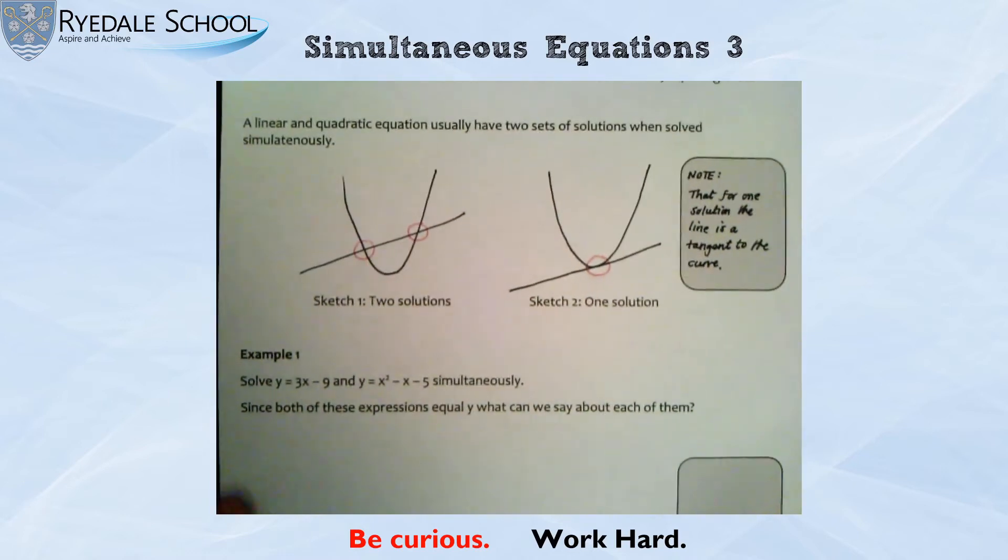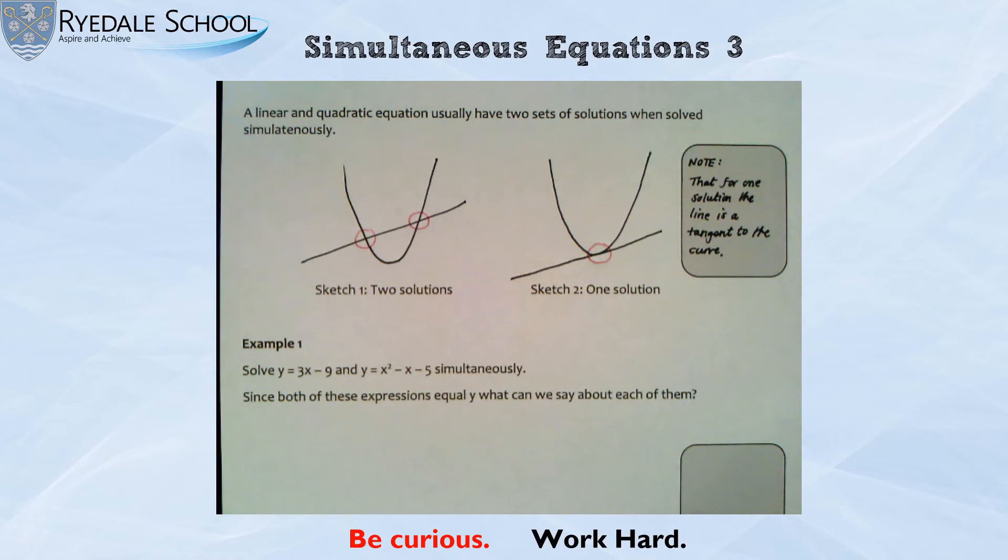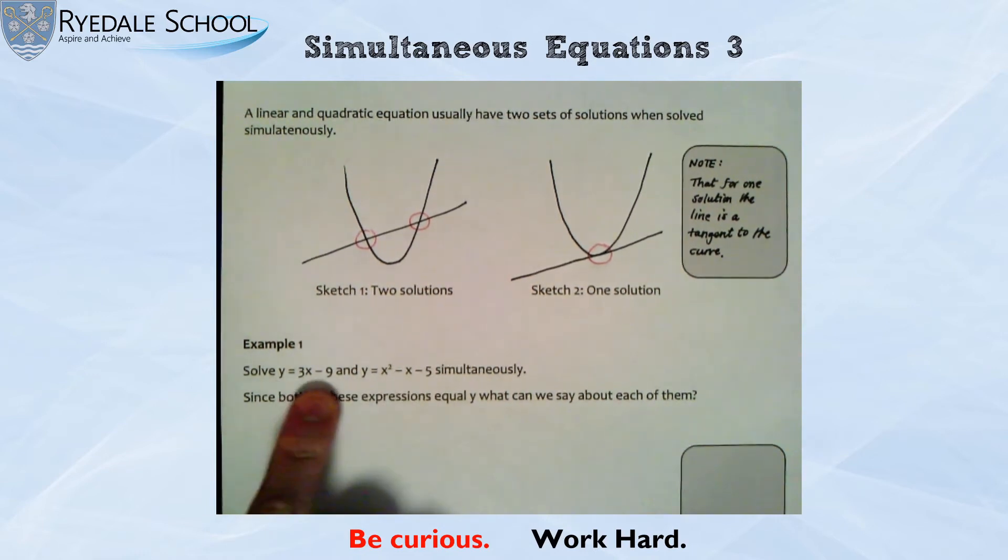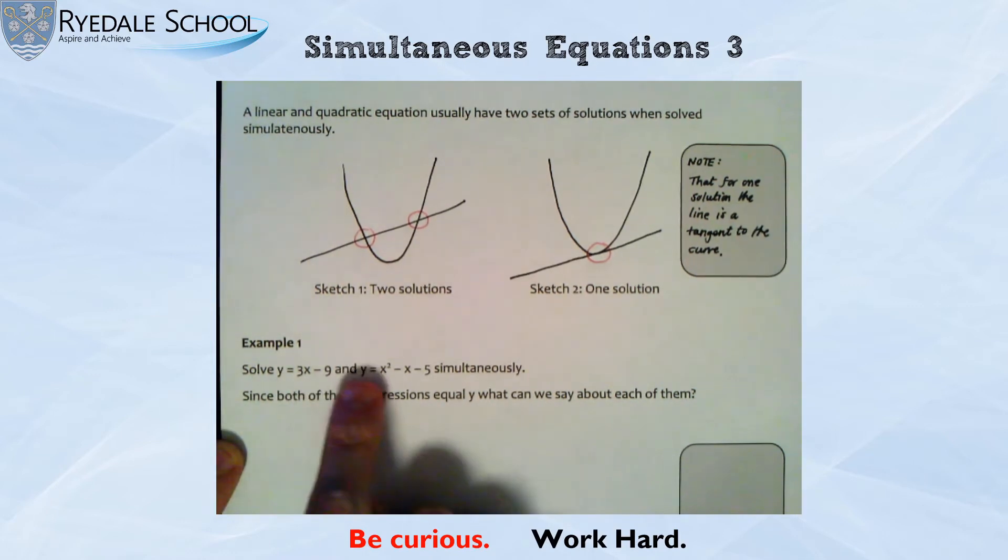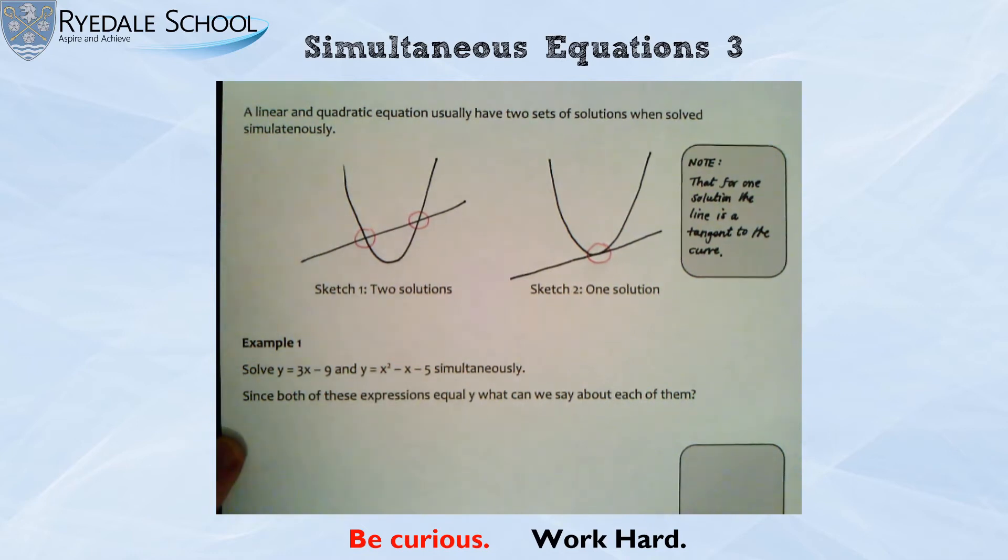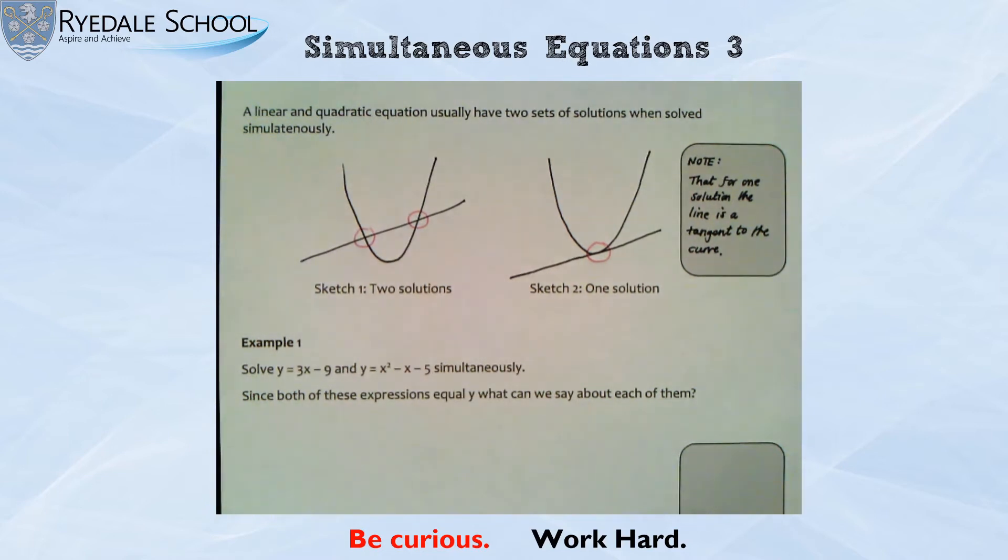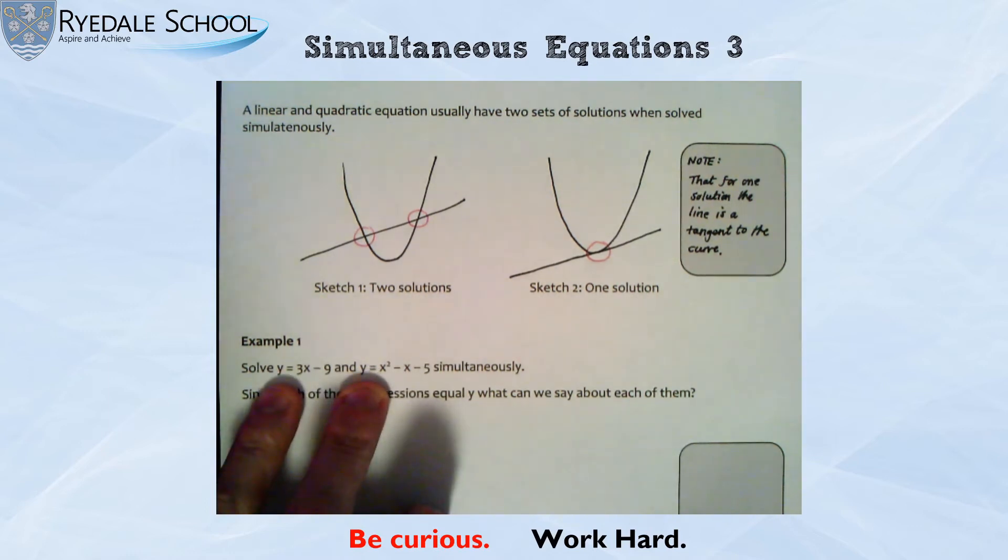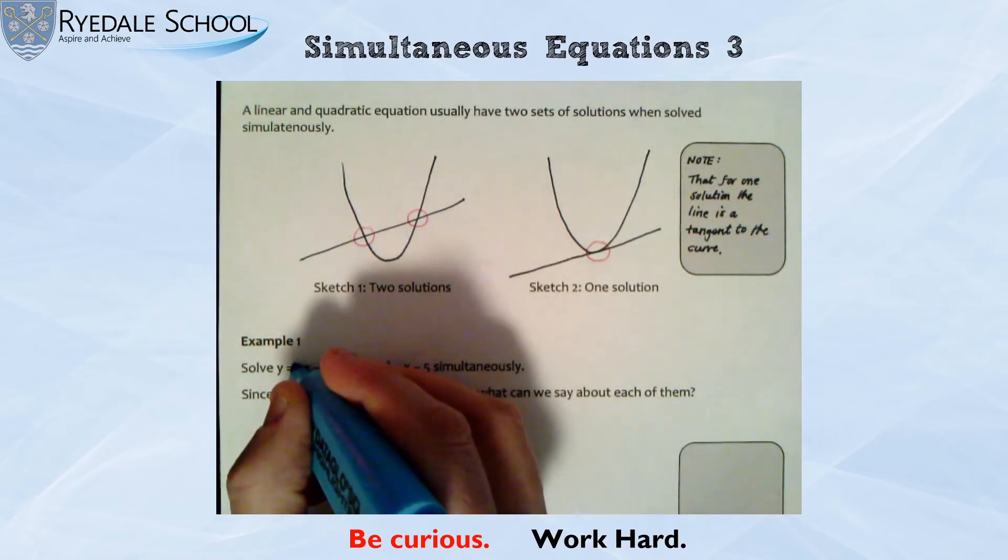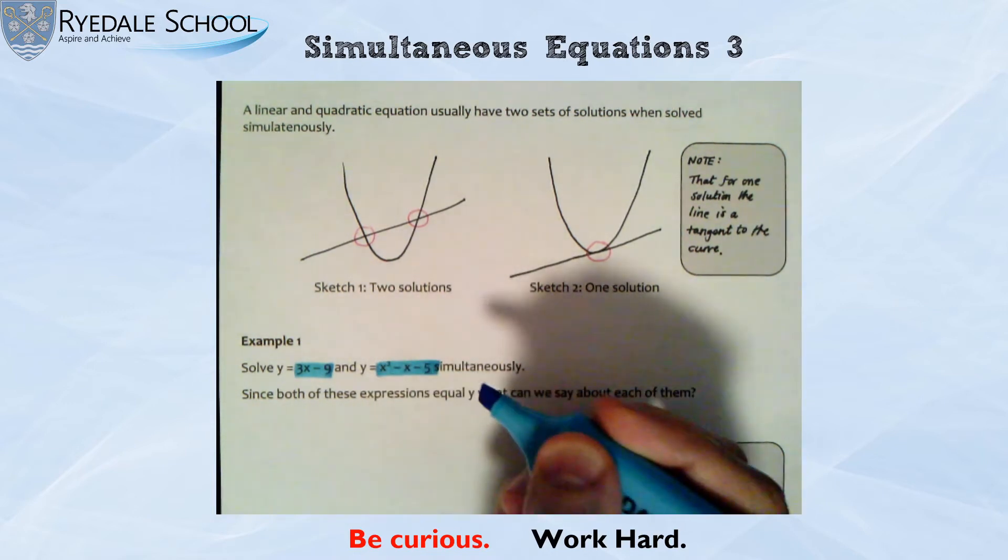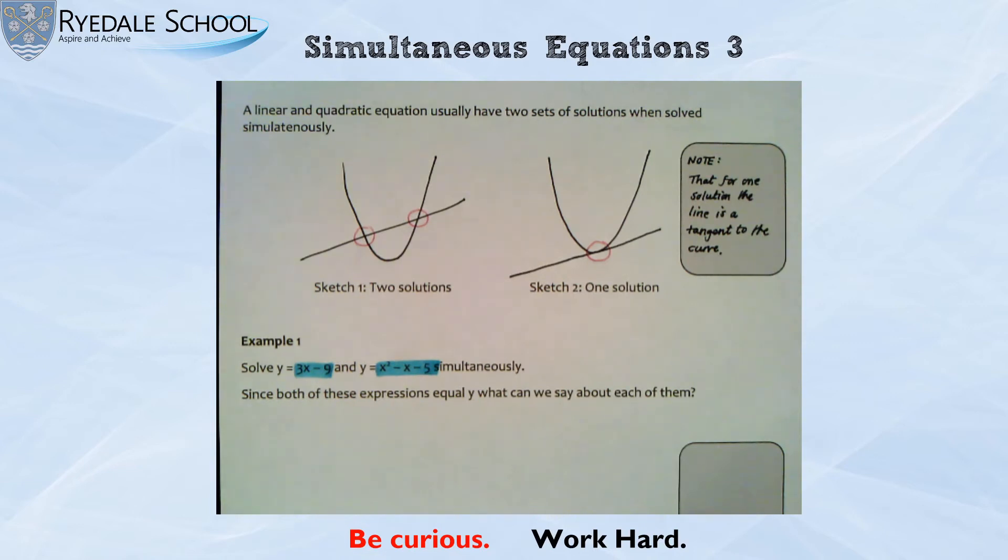So for example, let's look at my first one and we will see what is equal in these equations. So you could think of these as graphical functions because I've written them both as y equals. So I've got my linear function here. It says solve y equals 3x take 9. That's my straight line. And y equals x squared take away x take away 5. That is my quadratic simultaneously. Now this works because these expressions are both y equals. And I've said since both of these expressions equal y, what can we say about each of them? Well, if this equals y and this equals y, then both of those algebraic expressions must be equal to each other.